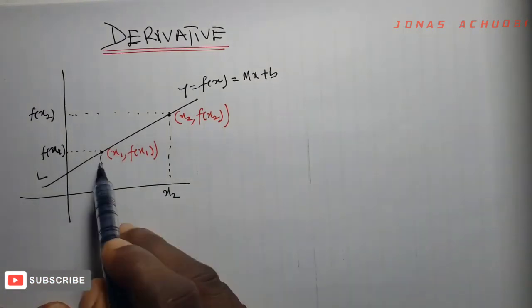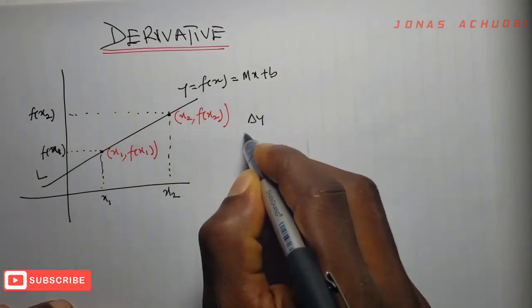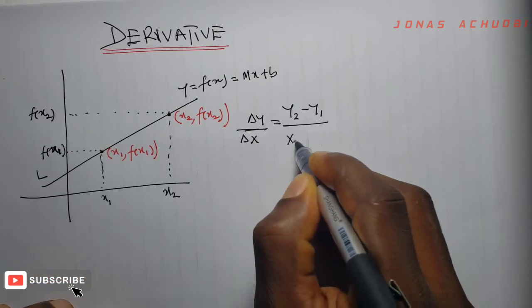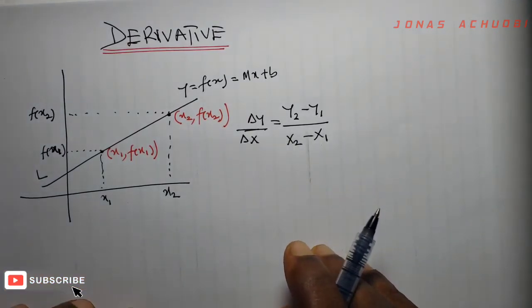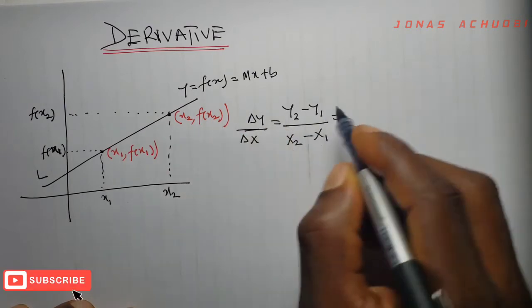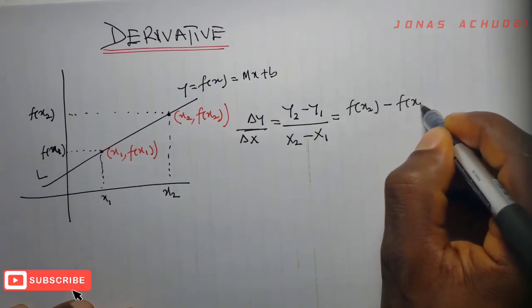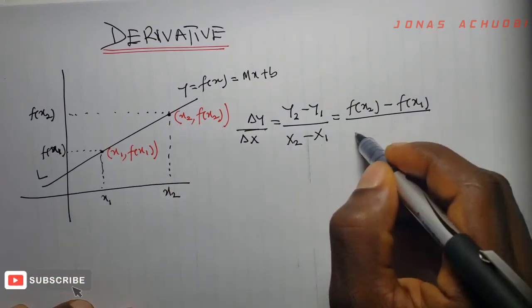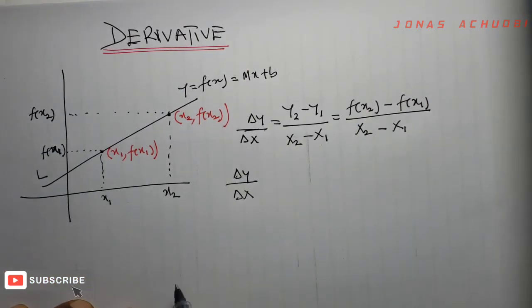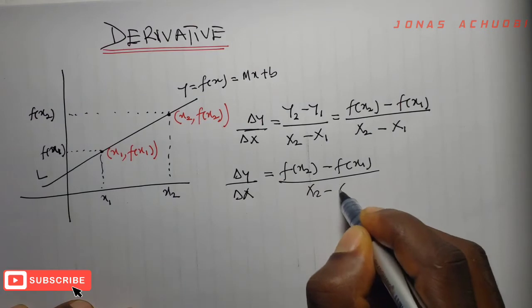If we wish to calculate the slope of the point on this line, we say slope is change in y divided by change in x, which is y2 minus y1 all over x2 minus x1. Our y2 is f of x2 and our y1 is f of x1, and x2 minus x1. So the slope of the line is equal to f of x2 minus f of x1 divided by x2 minus x1.